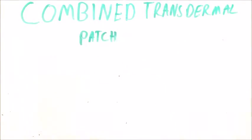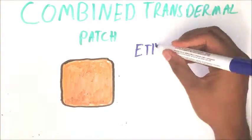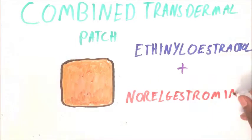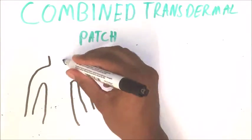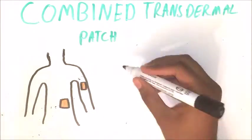The contraceptive patch is a small adhesive patch that uses both estrogen and progestogen to prevent pregnancy. It has to be applied to the body and can be placed on most areas as long as it's clean, dry, and not very hairy, for example on the abdomen, upper arm, or the buttocks.